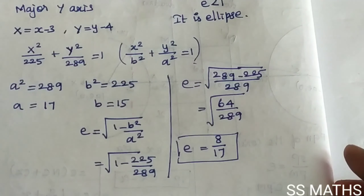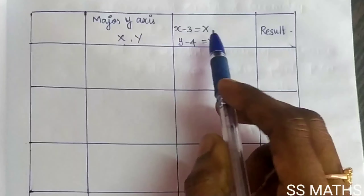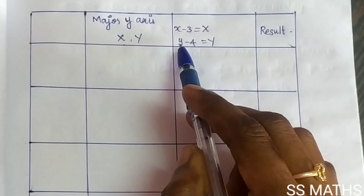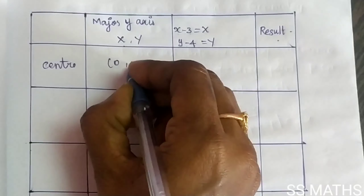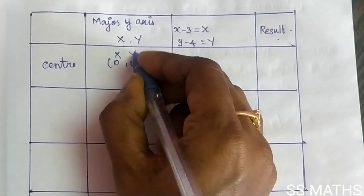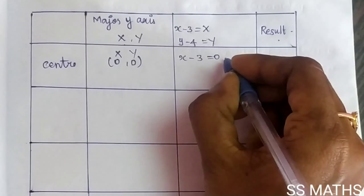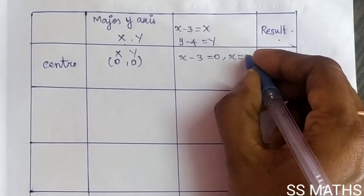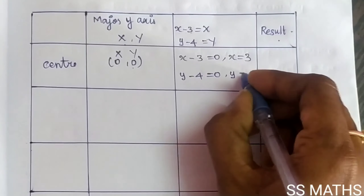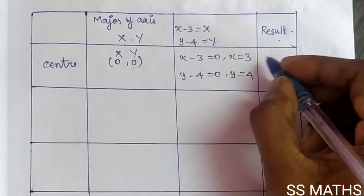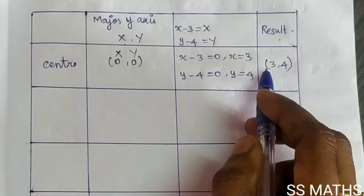Next, find the center. The center in standard form is (0, 0) for capital X and capital Y. Substituting back: X = x − 3 = 0 gives x = 3; Y = y − 4 = 0 gives y = 4. So the center is (3, 4).